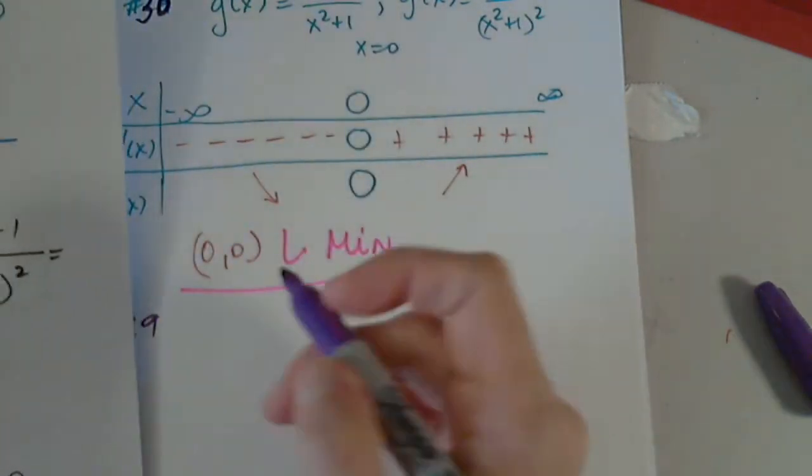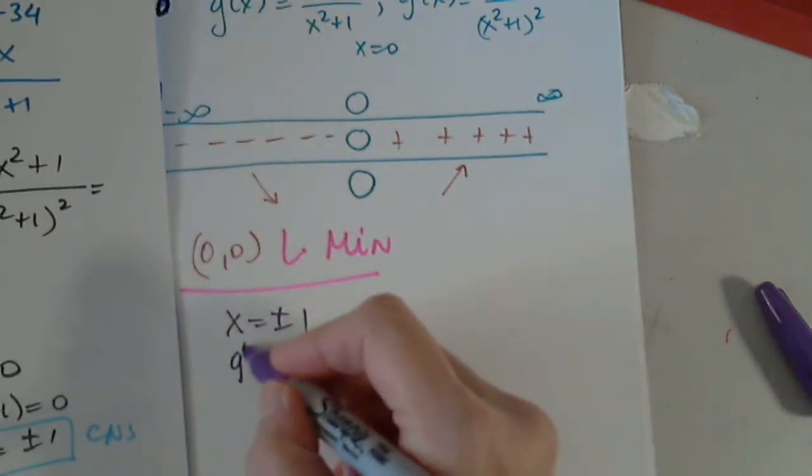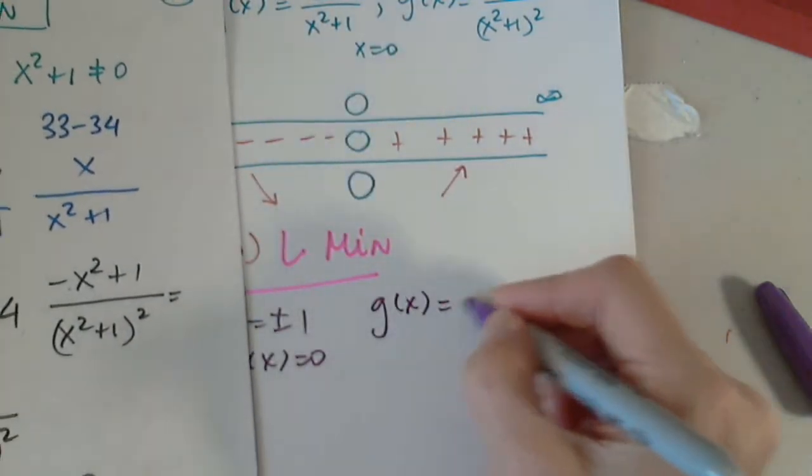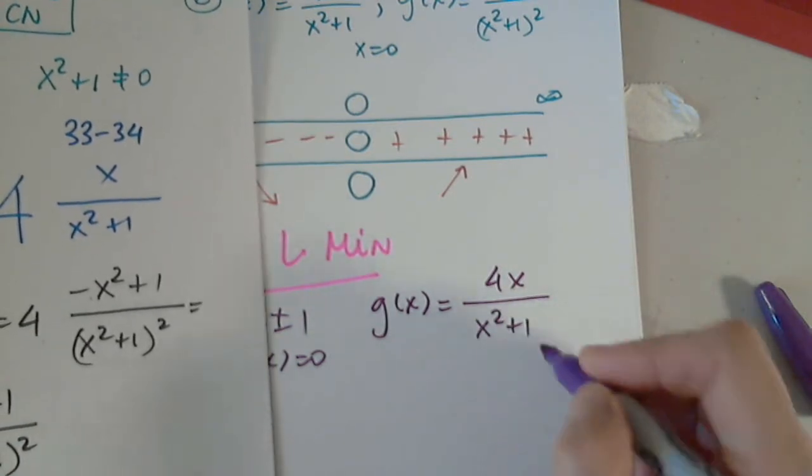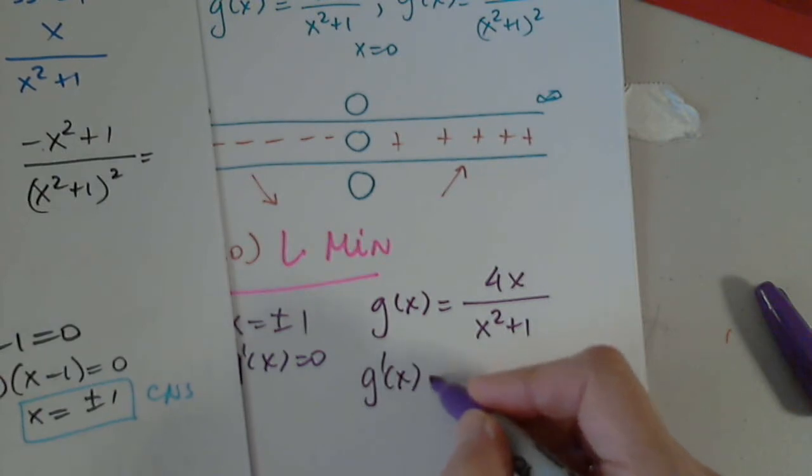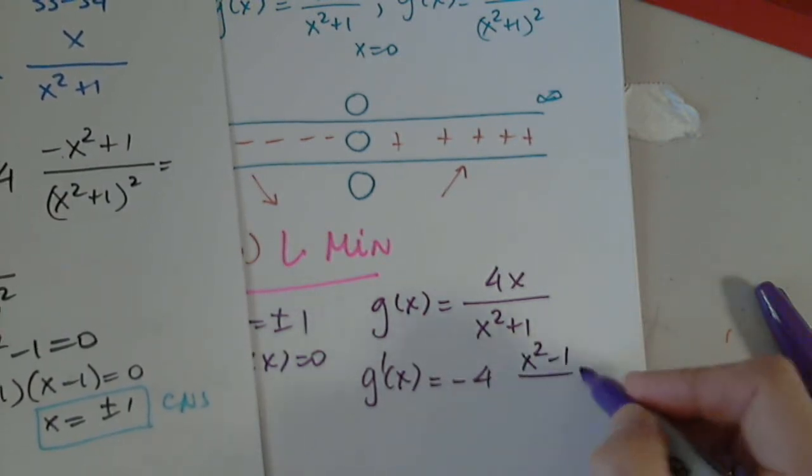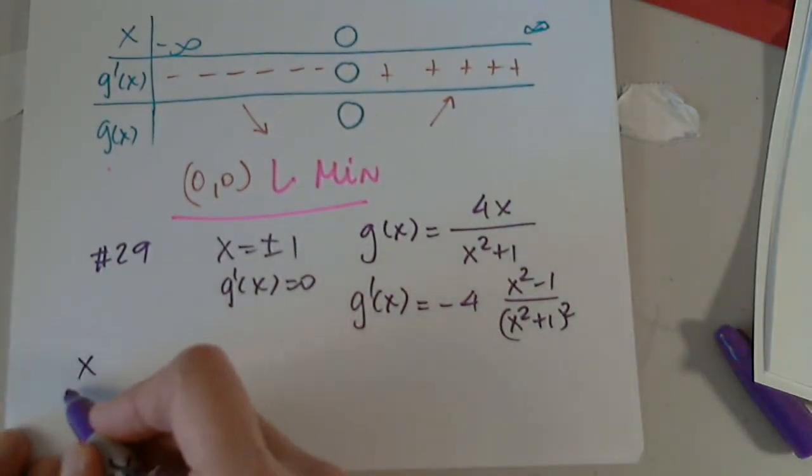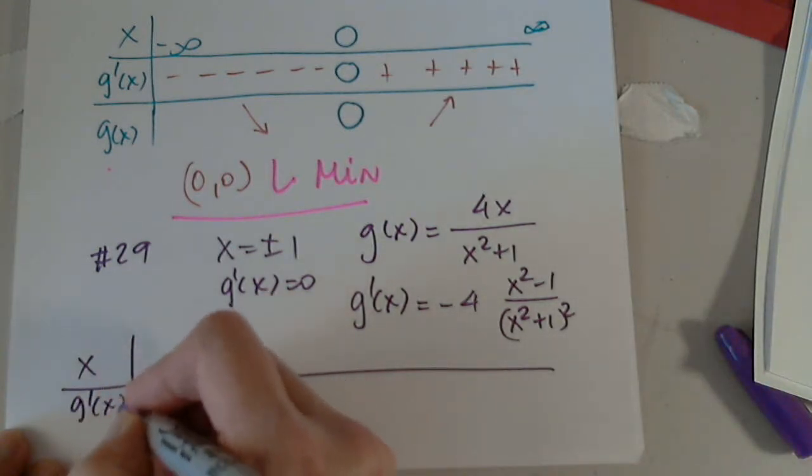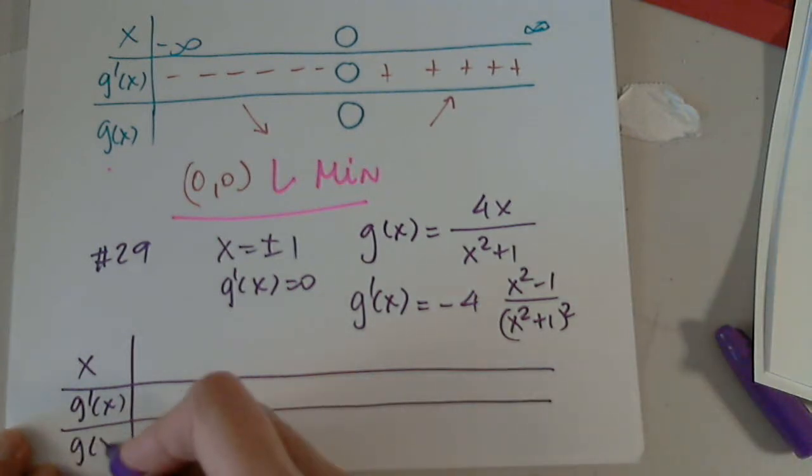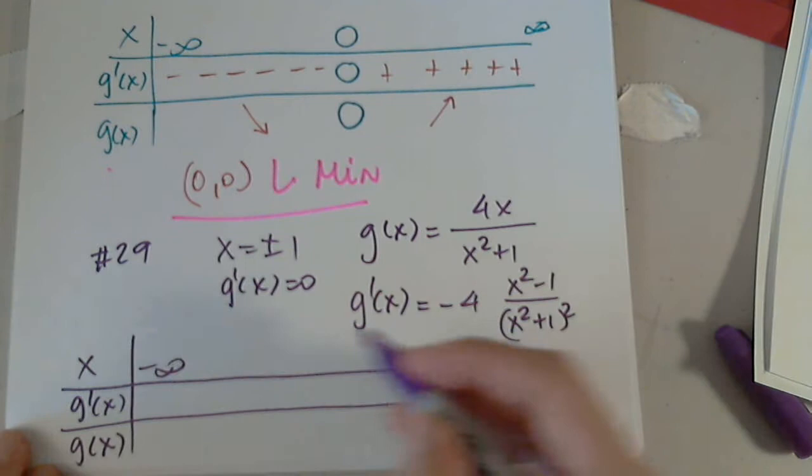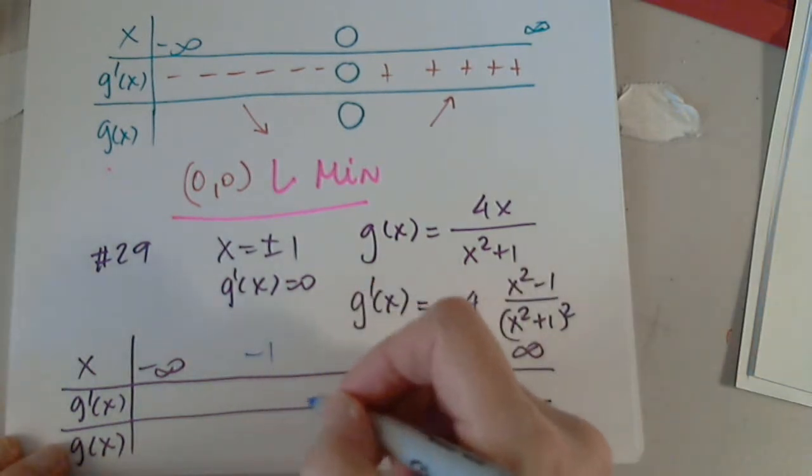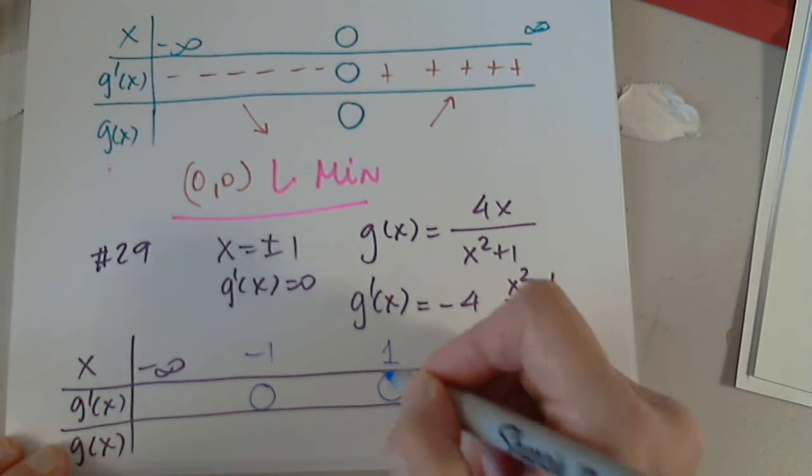Where are you 29? This one has two critical numbers, so they are plus or minus 1. They come from g prime equals 0. I have to copy g(x) = 4x/(x²+1), and I have to copy g prime as -4(x²-1)/(x²+1)². Perfect, g prime first always, g at the bottom. I'm looking at this function, it's always defined, no headache whatsoever. I know that we found here two critical numbers. We found negative 1 from g prime being 0, and 1, and g prime is 0.